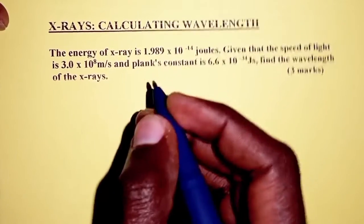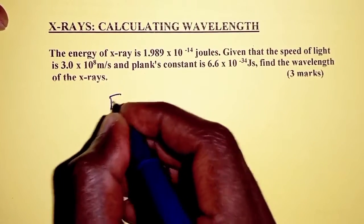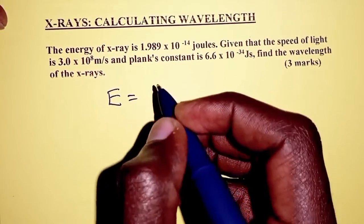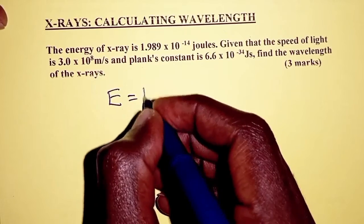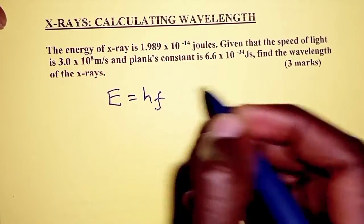So the first thing we need to note is that the energy of an electromagnetic radiation is given as the Planck's constant h times the frequency.